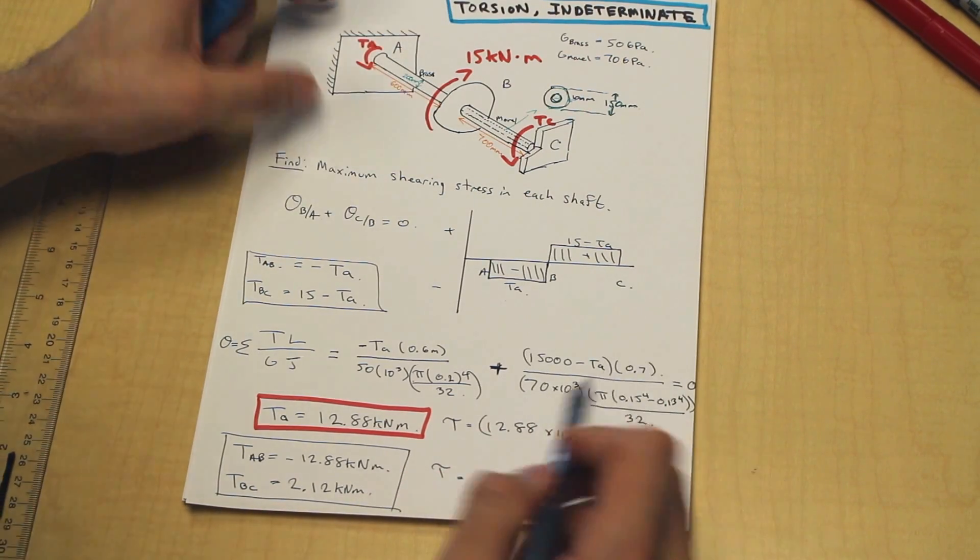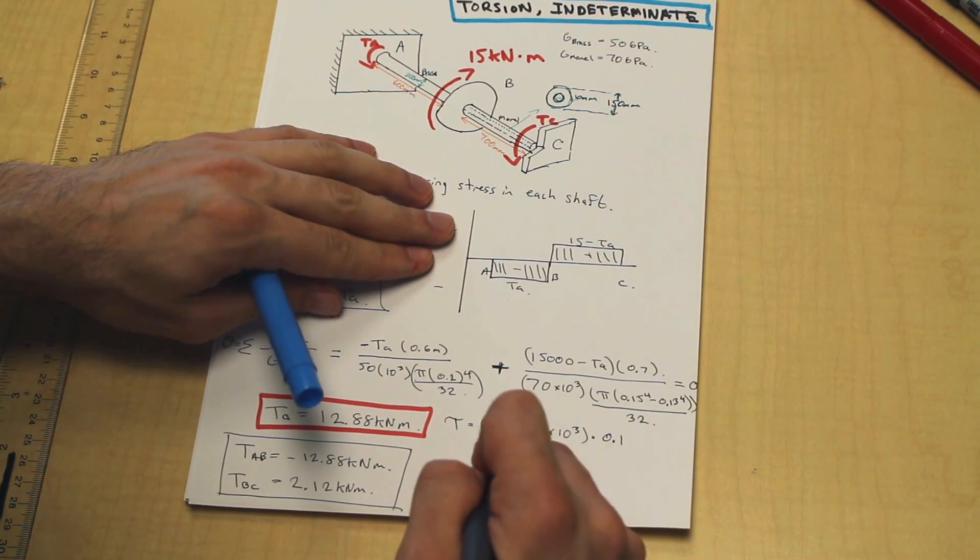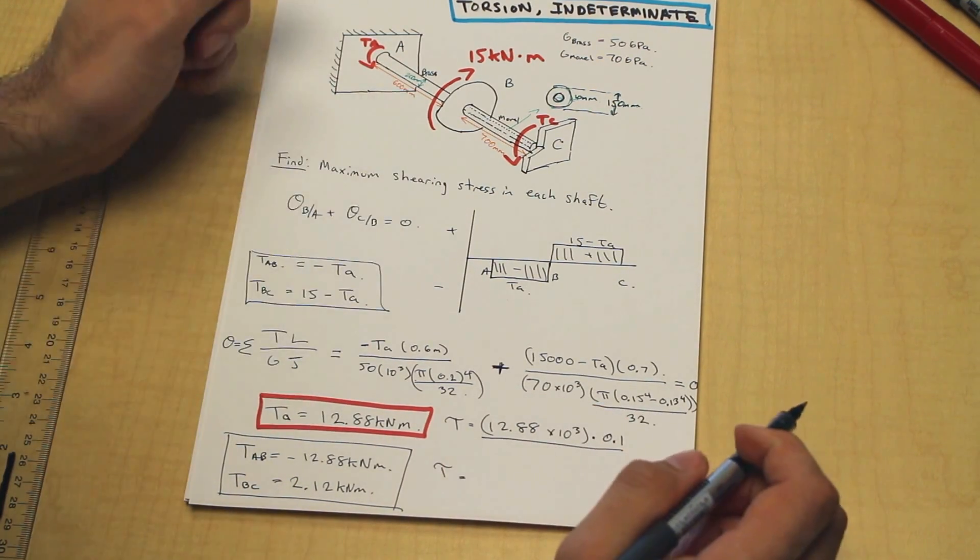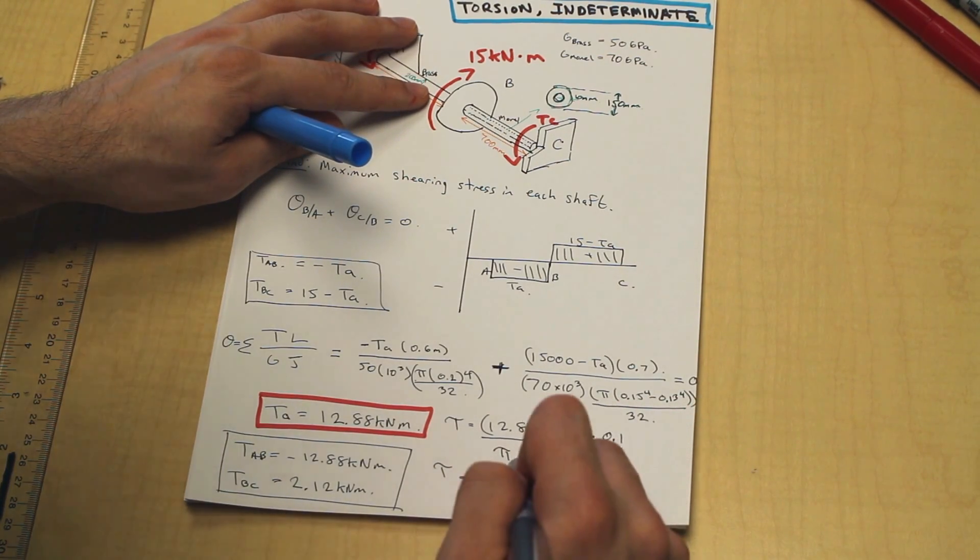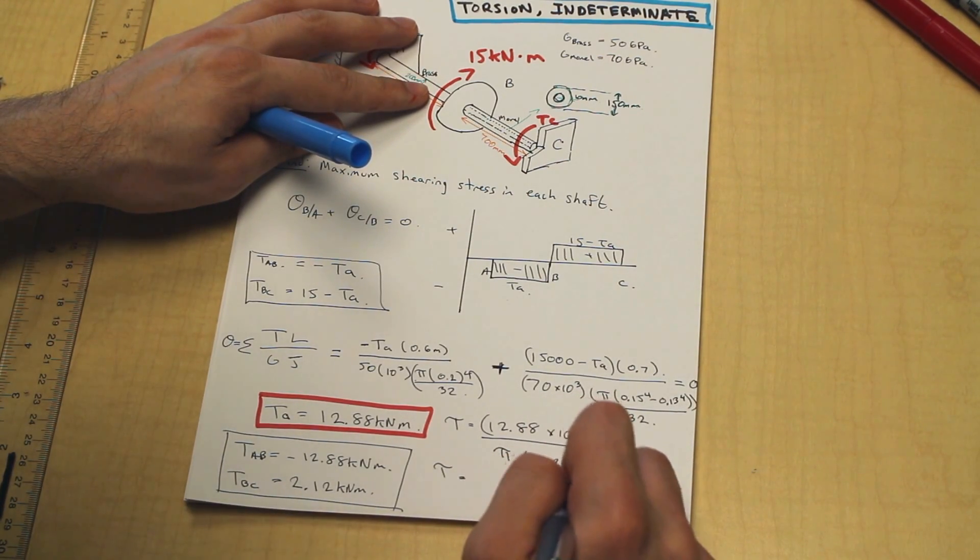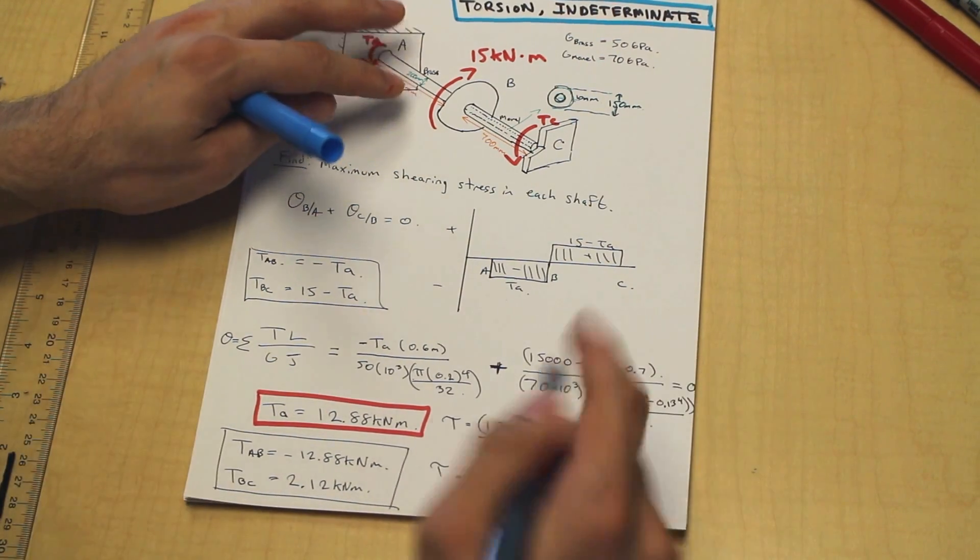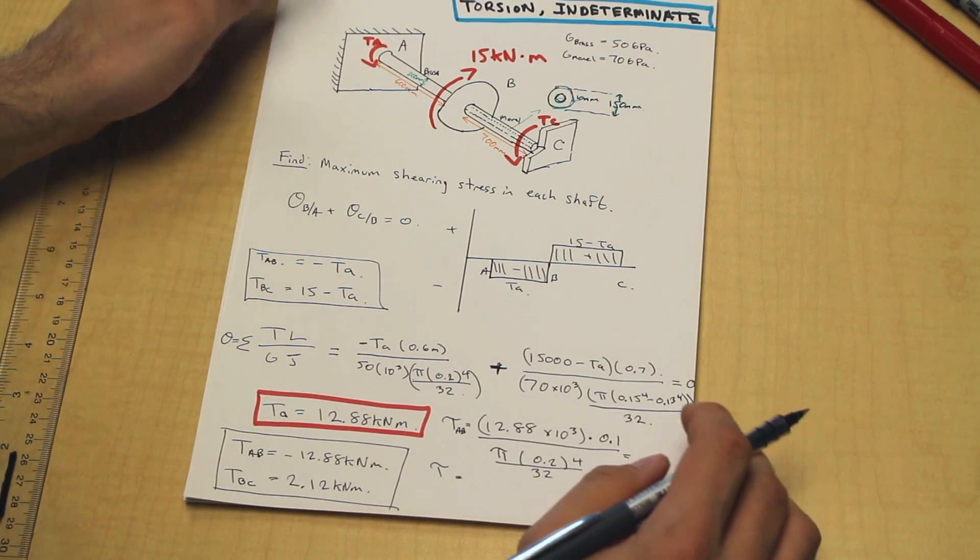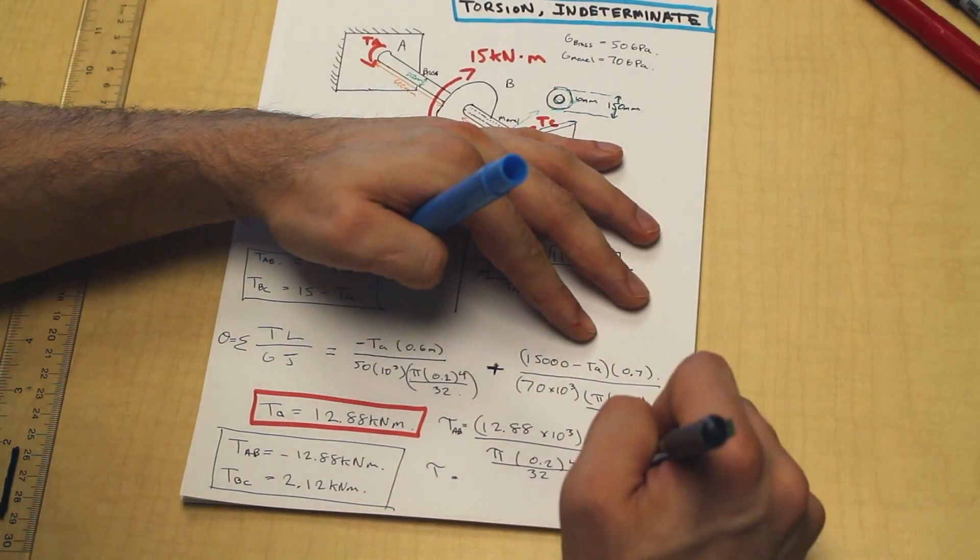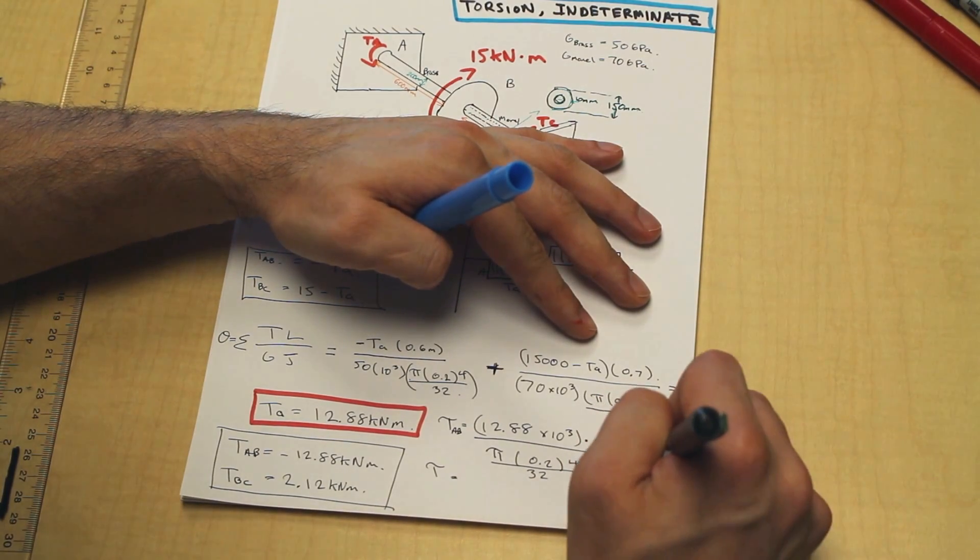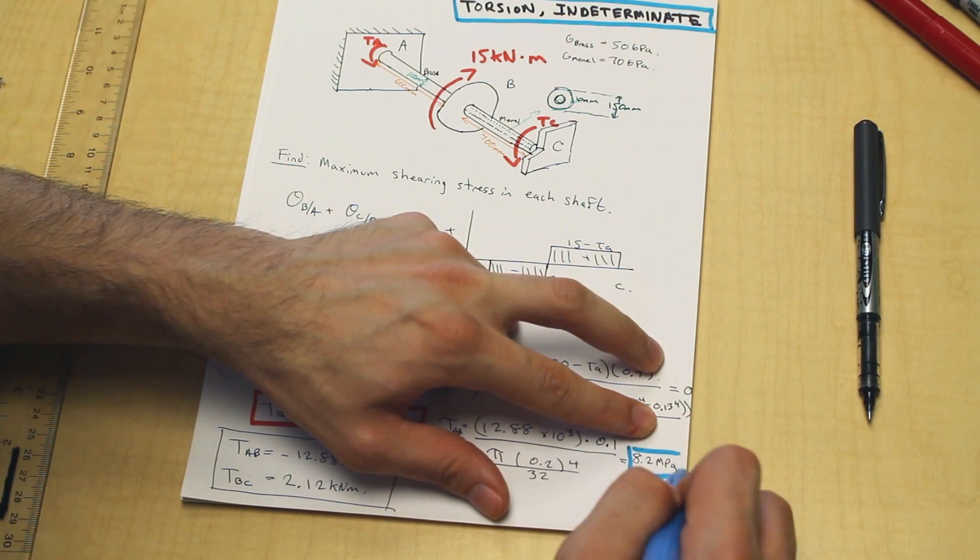Our diameter is 0.2 meters, so we're taking half of that for our C. And our J, if you remember us doing this before. So our shearing stress, the maximum shearing stress in our shaft AB, which is brass, is going to be 8.2 MPa. I'll just give that a little blue here so you guys can see that.